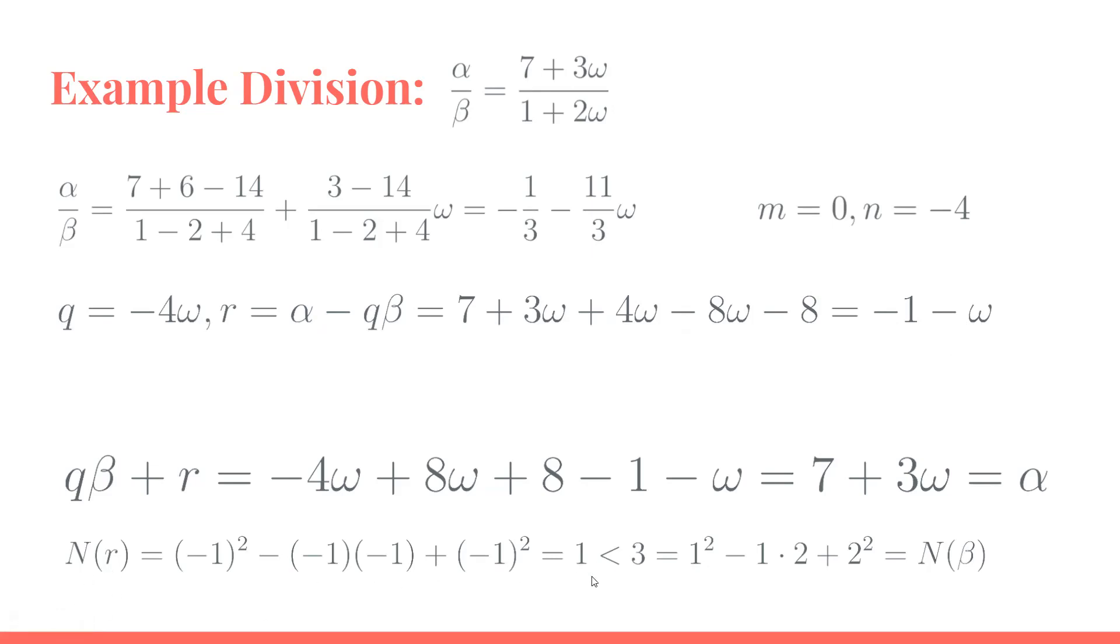And the norm of r is 1, while the norm of β is 3. So we definitely have that the remainder has a smaller norm than β.